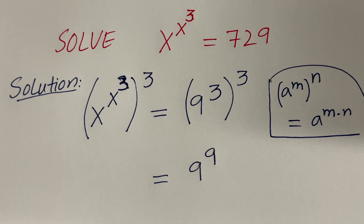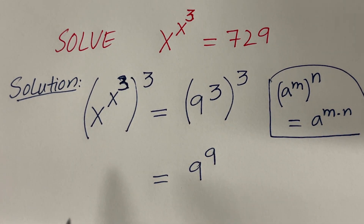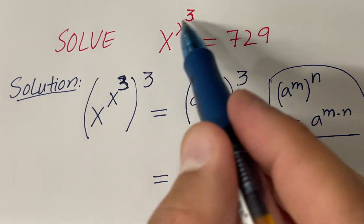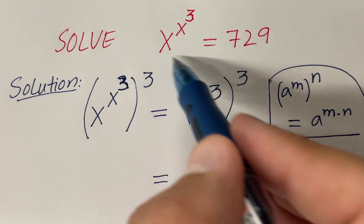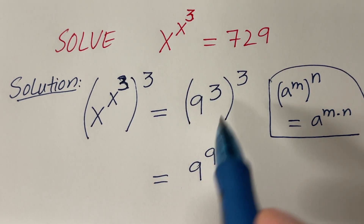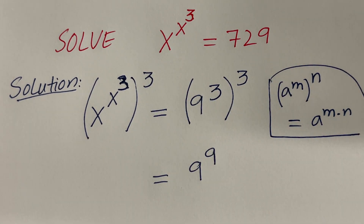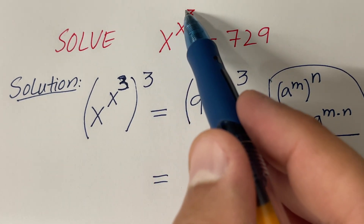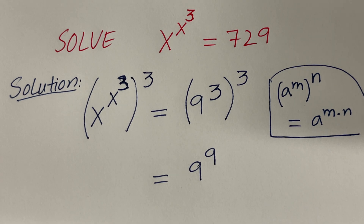But on the left hand side, the question is: can we use this property here? The answer is no, because we don't have parentheses like this. If you don't have parentheses then these are called power towers, and power towers cannot be simplified by multiplying the exponents together.